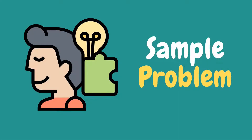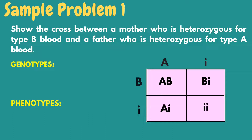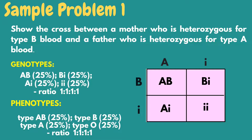Let's try to understand each problem about ABO blood typing using the Punnett square. Show the cross between a mother who is heterozygous for type B blood and a father who is heterozygous for type A blood. The following could be the possible blood types of their offspring: blood type AB, B, A, and O. Both the genotypic and phenotypic ratio will be 1:1:1:1.